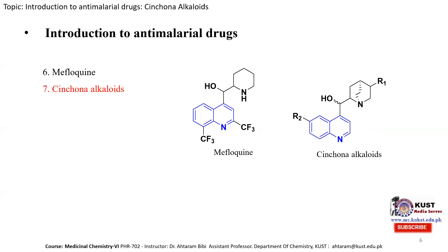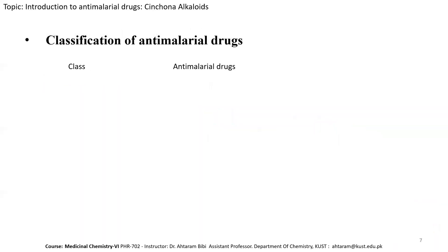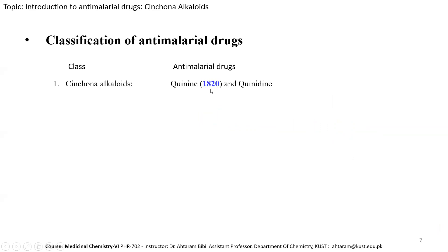The anti-malarial drugs are arranged by date of discovery. The first class is cinchona alkaloids — quinine and quinidine — which were the first anti-malarial drugs used for the treatment of malaria, extracted in 1820 from the cinchona tree. Quinine is thus the very first anti-malarial drug.